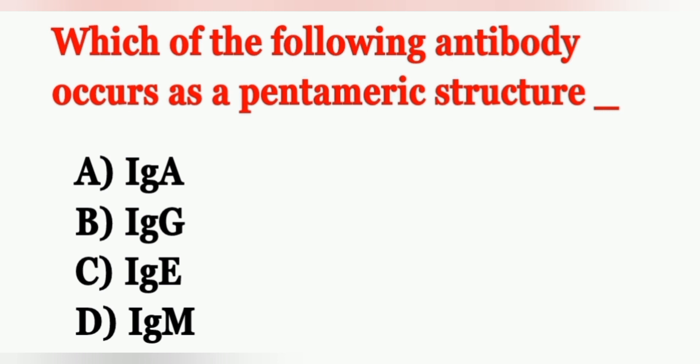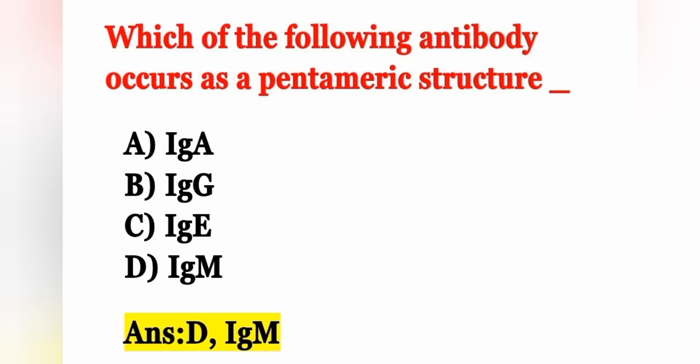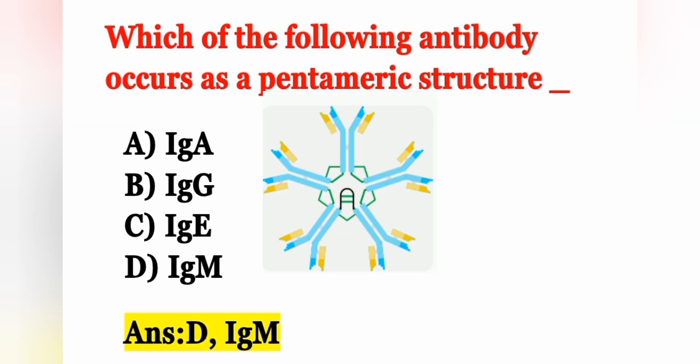Next question: Which of the following antibodies occurs as a pentameric structure? Option A: IgA, Option B: IgG, Option C: IgE, Option D: IgM. The correct answer is Option D, IgM. IgM has 5 immunoglobulin subunits, which is why it has a pentameric structure.